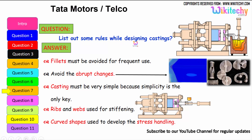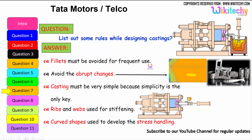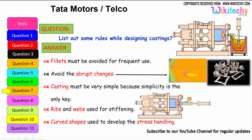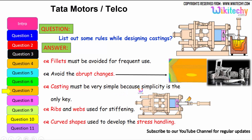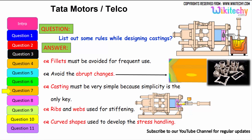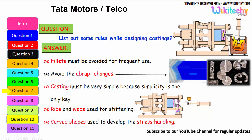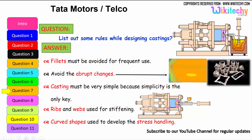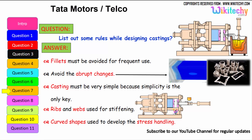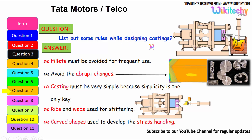Let us see some of the rules for designing castings. Fillets must be avoided for frequent use. Avoid abrupt changes in section. Castings must be kept very simple — simplicity is the key. Ribs and webs are used for stiffening. Curved shapes should be used to improve stress handling. These are the rules which we have to follow for castings.